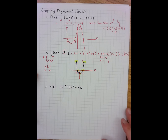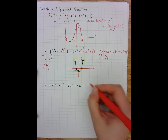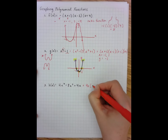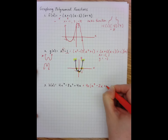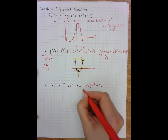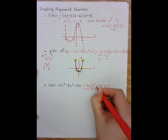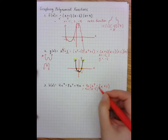Example three is also not in factored form, so I need to factor it. The first thing I notice is that all three terms have a four and an x in common. Factoring that out gives me 4x times the quantity x squared minus two x plus one.